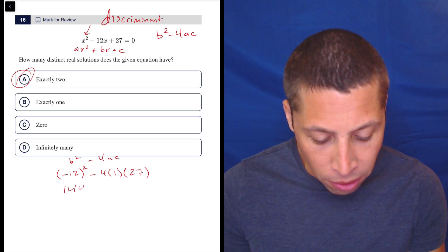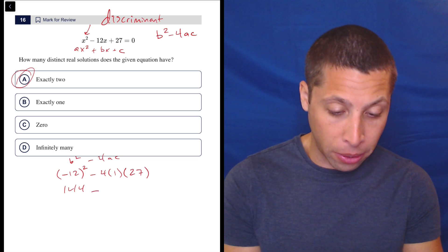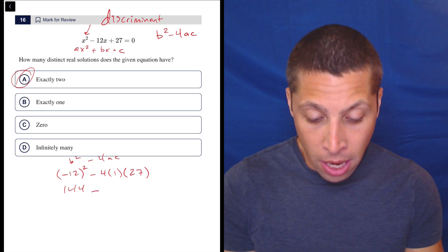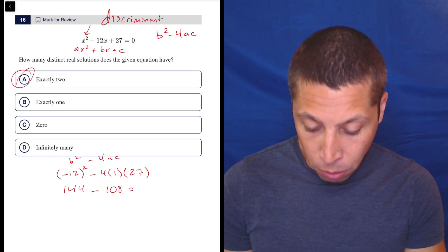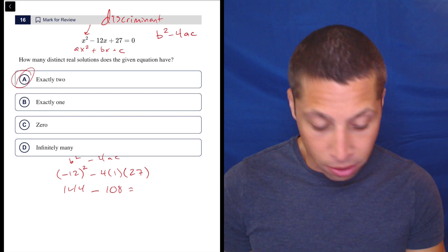So 144 minus 4 times 27. I'm going to put that in the calculator. 4 times 27 is 108. And that is 147 minus 108 is 39.